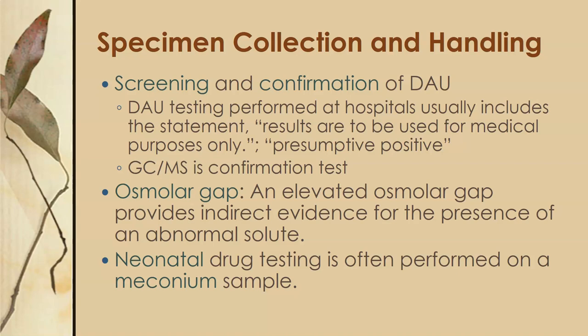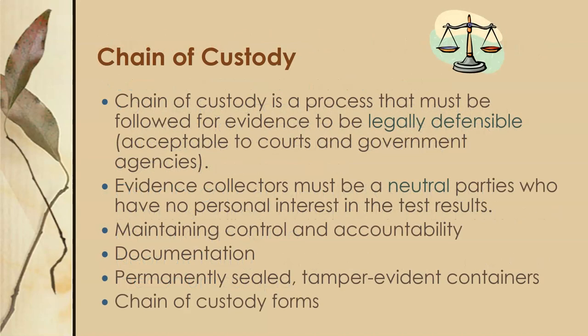We can also do neonatal drug testing, which is often performed on the meconium sample — the first bowel movement of the infant. This is done if it is suspected that the mother was abusing drugs, to check for exposure of the infant to those drugs. Chain of custody is a process that must be followed for evidence to be legally defensible — meaning acceptable to courts and governmental agencies. Evidence collectors must be neutral parties who have no personal interest in the test results. Chain of custody is designed to maintain control and accountability, with thorough documentation of everybody involved with the specimen.